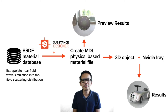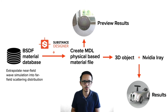Once we have the FDTD simulation result, the next step is to perform the near-field to far-field transformation, to get the BSDF file of the nano material. We then convert this BSDF file into a binary material database — in this case, we use the .mdstf format.